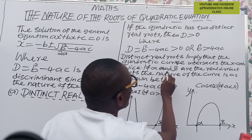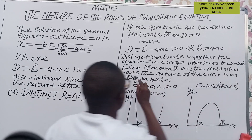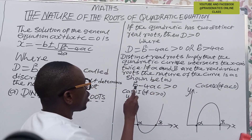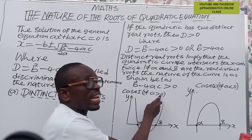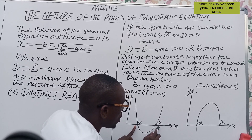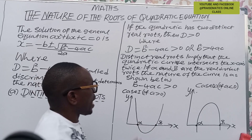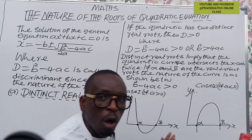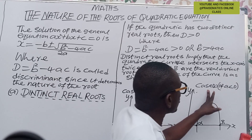Assuming that alpha and beta are the distinct real roots, the nature of the curve is as shown. Case one: if b² − 4ac > 0 and a is greater than zero, the curve will be a concave-up (U-shaped) curve. It will cut across the x-axis at two points — alpha and beta. That is when a is a positive number.